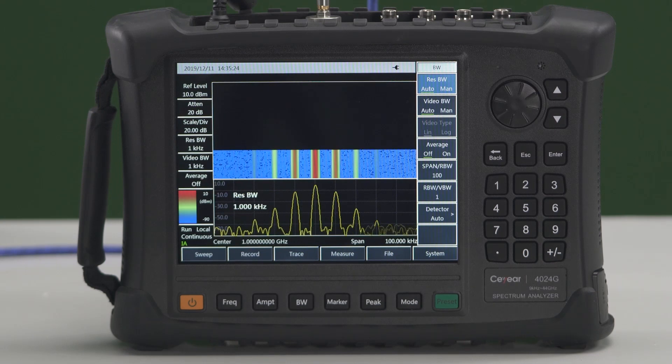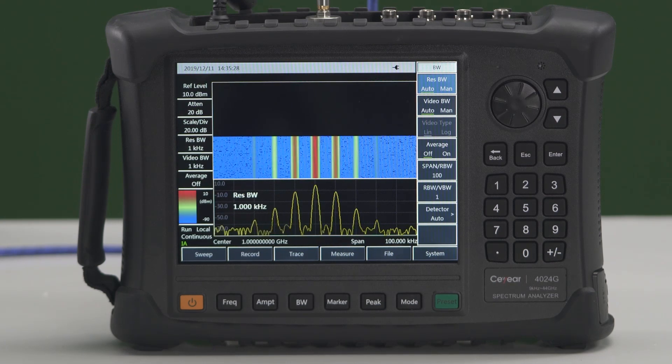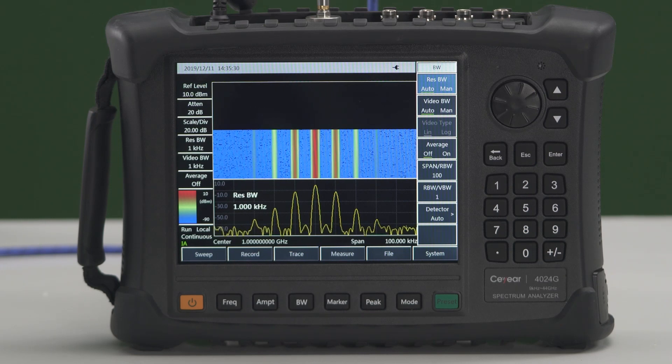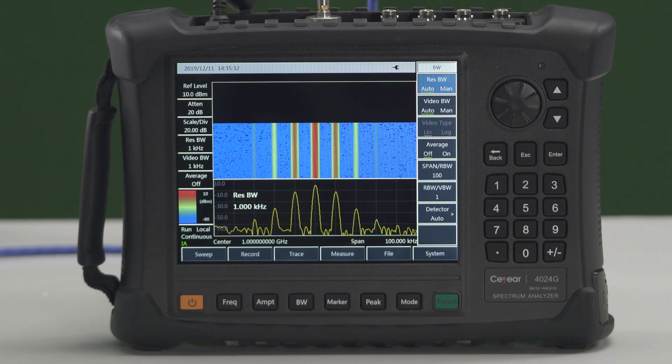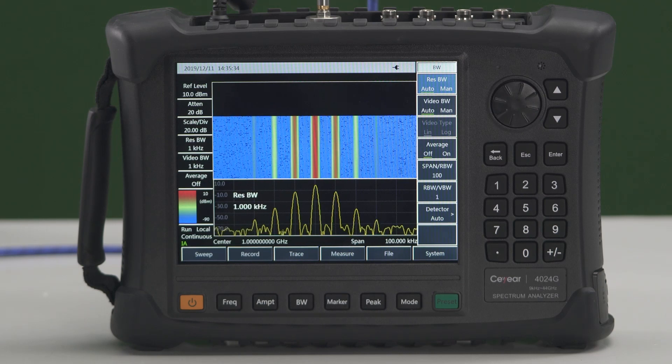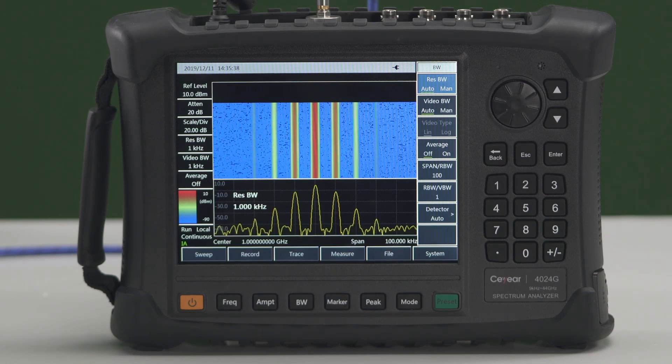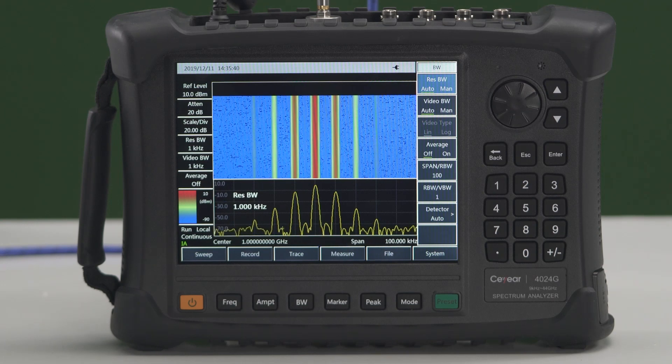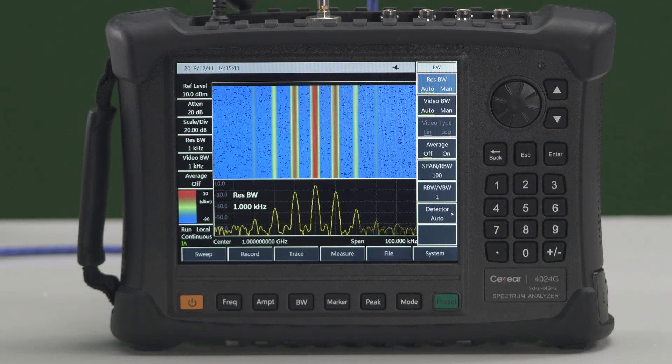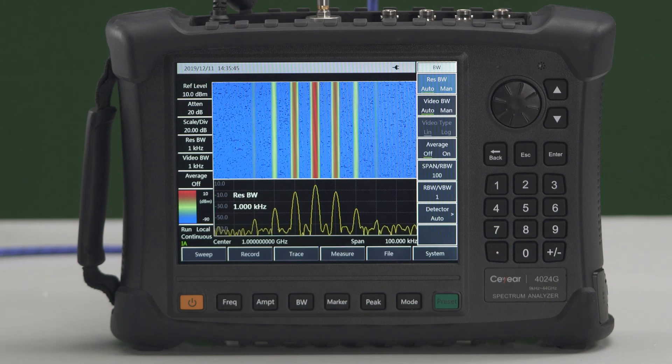In interference analyzer mode, C-Year 4024 supports waterfall chart and RSSI measurement that can work simultaneously. It can record measurement data for a long time period. The internal space can save up to 1.8 million curve data points and supports data storage in SD card and USB disk. Recorded data files can be played back on the instrument.